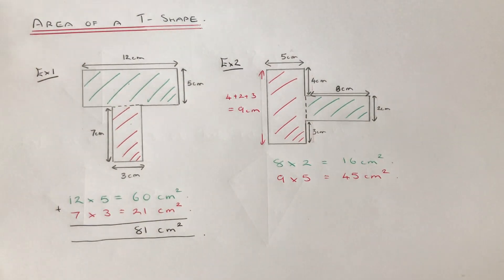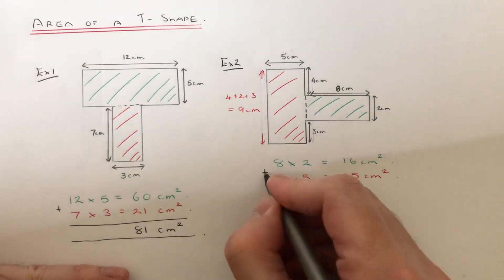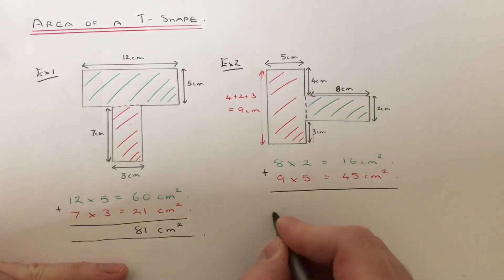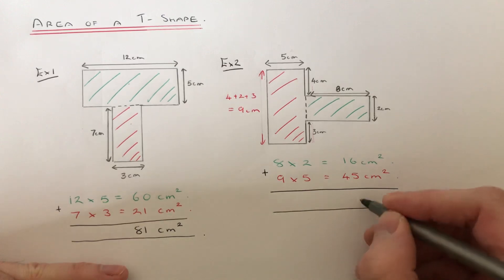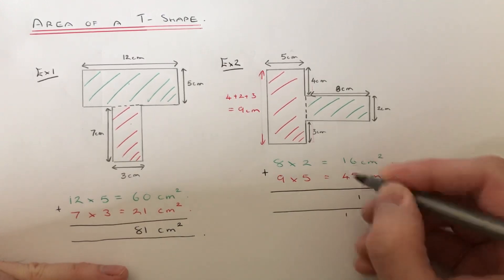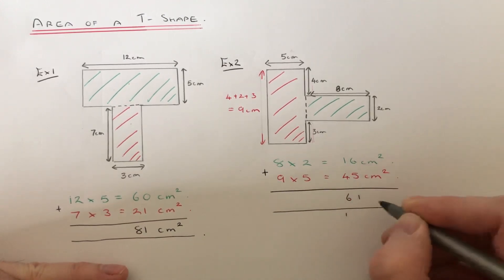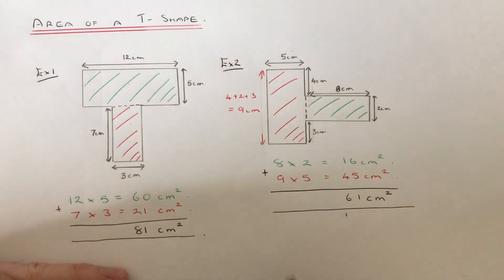So if we now have worked out our two areas, we just need to add these two numbers up. So 6 add 5 is 11. 4 add 1 is 5 plus the 1 is 6. So we get an answer of 61cm squared.